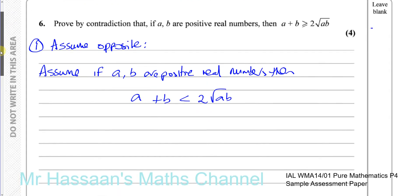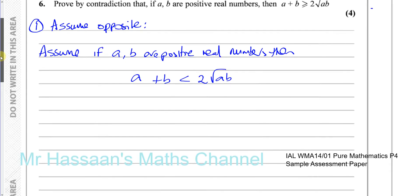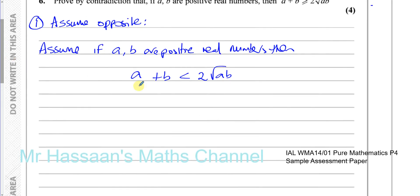Once you've assumed the opposite, you have to show that assuming the opposite leads to some sort of contradiction — something that doesn't make sense — and therefore that proves that the original statement was true.